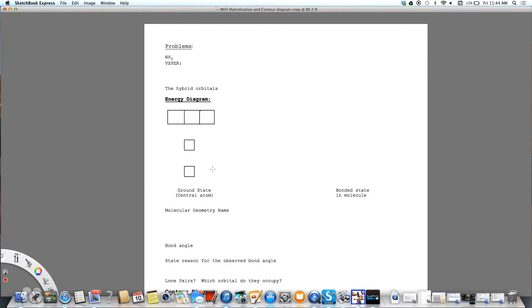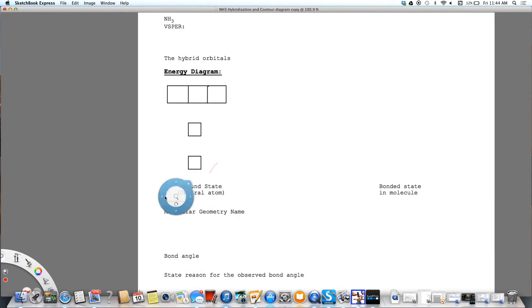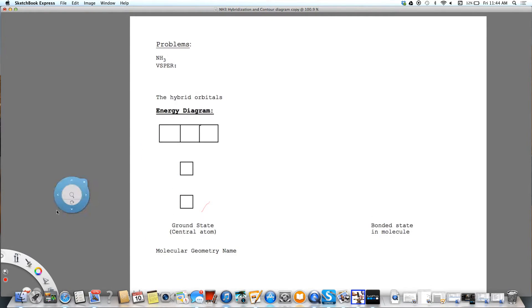There are four electron groups and so we want to draw four electron groups. That means it's tetrahedral as far as the electron geometry.